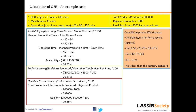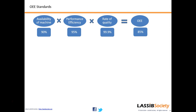Now we calculate Overall Equipment Effectiveness. Availability × Performance × Quality equals OEE, and OEE is always expressed as a percentage. So 66.67% × 76.2% × 99.87% = approximately 50.74%, rounded to 51%. This is less than the industry standard. Industry standards specify Availability around 90%, Performance efficiency around 95%, and Quality rate at 99.9%, which yields an OEE of 85%.